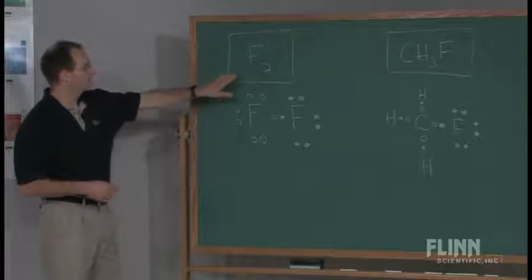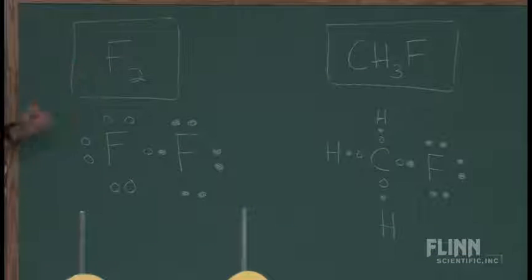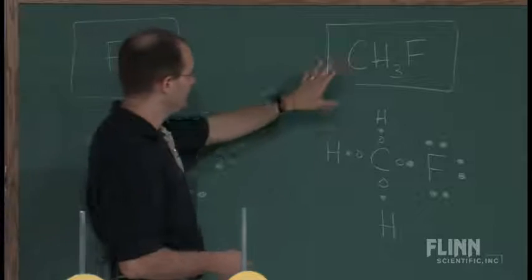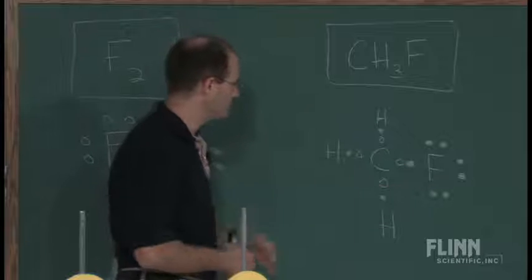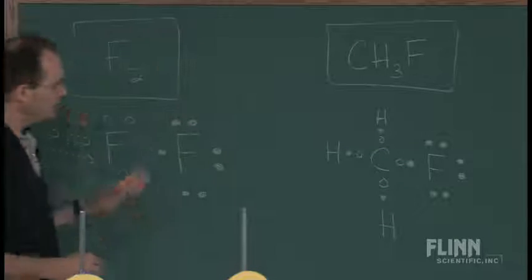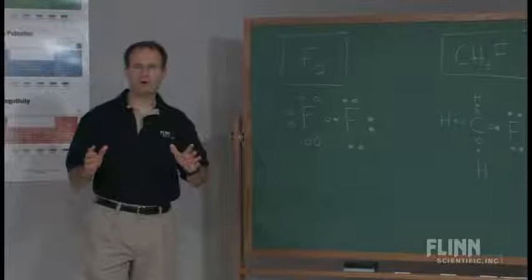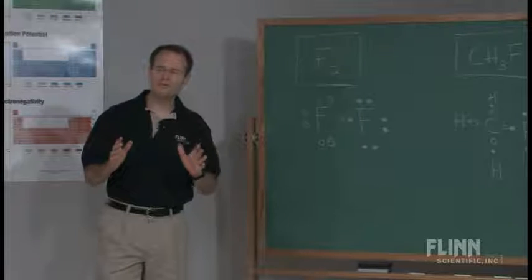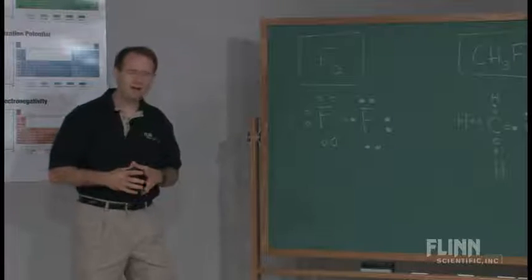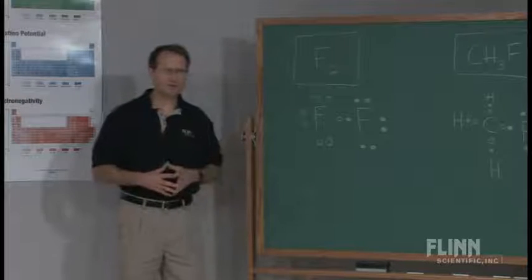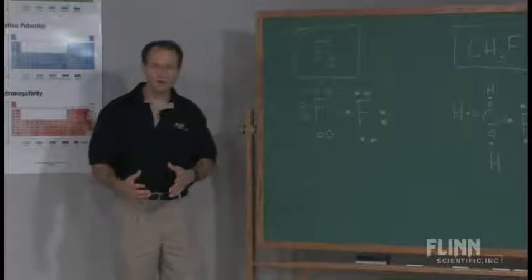I have here fluorine, a diatomic molecule, and its respective Lewis structure shown below. Over here I have this compound and I've drawn the Lewis structure here. Students should be comfortable at this point drawing those things. Then I tell the students I want to focus on the shared pair of electrons, and sometimes students struggle when shown all these electrons — which ones are shared, which ones are unshared.